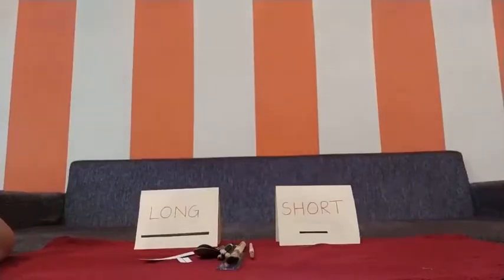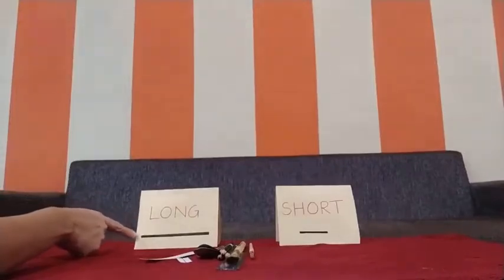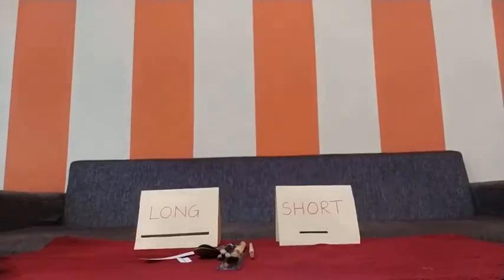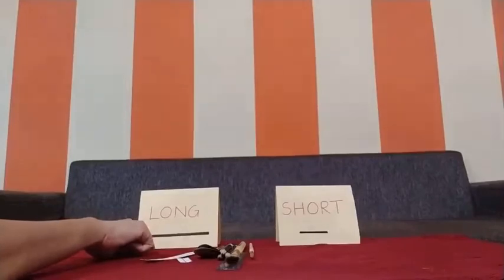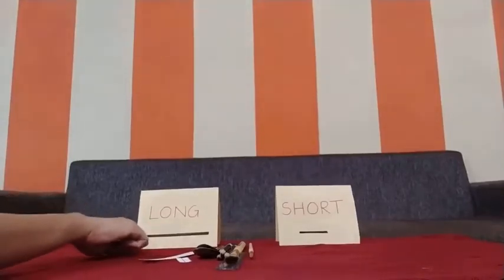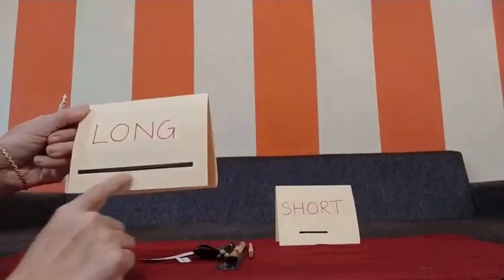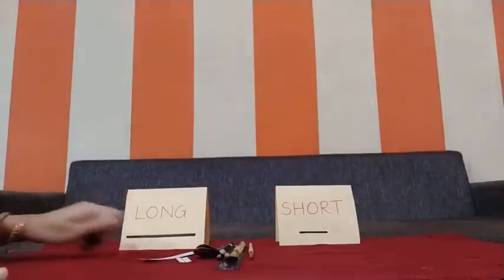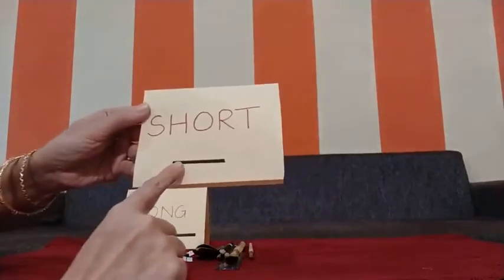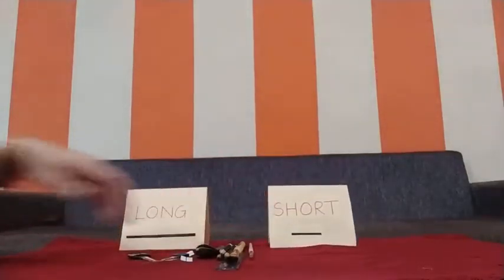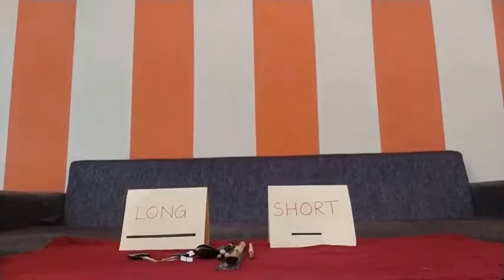Now we will learn long and short. You can see a long line here. Long and short are basically decided on the basis of the length. You can see the length here. You can easily see the length. This is a long line. Now look at this — this is a short line. So on the basis of the length, long and short, these two terms are used.